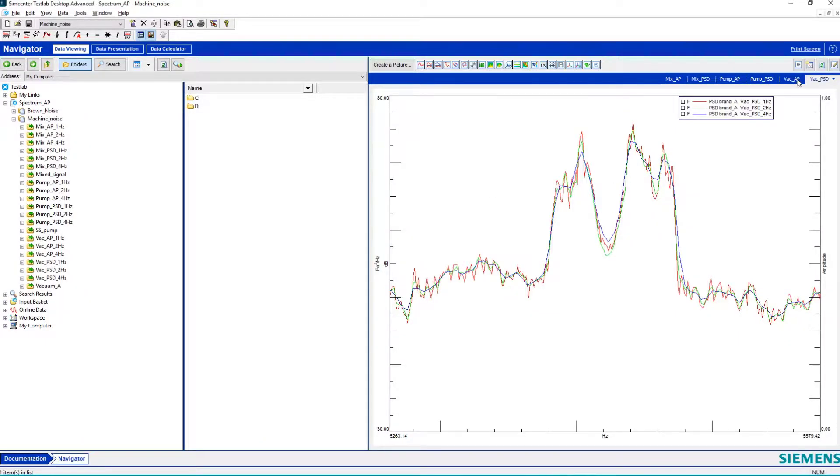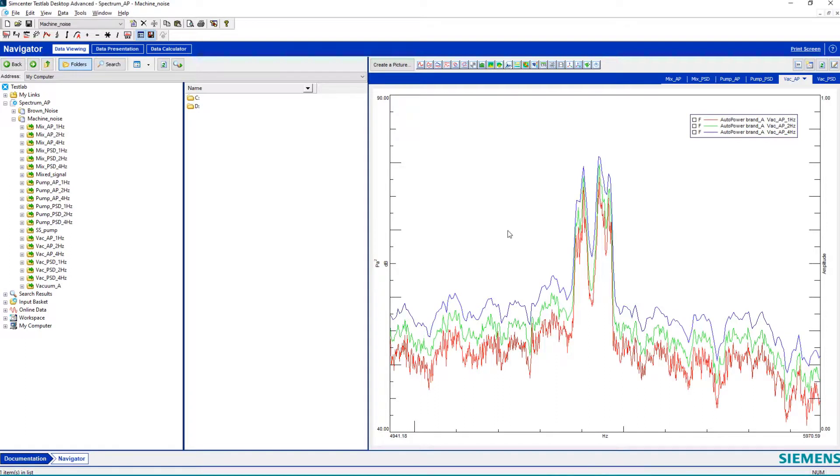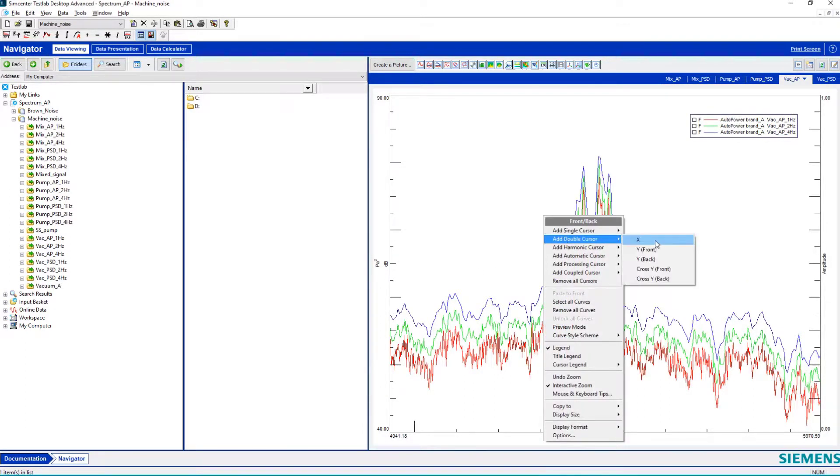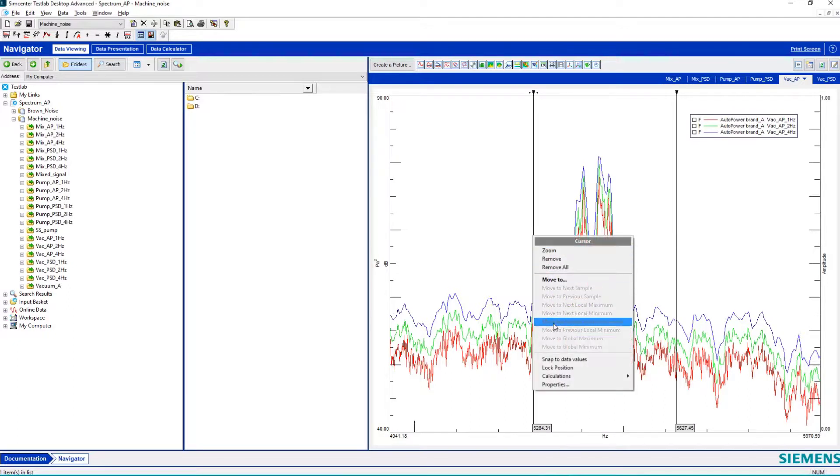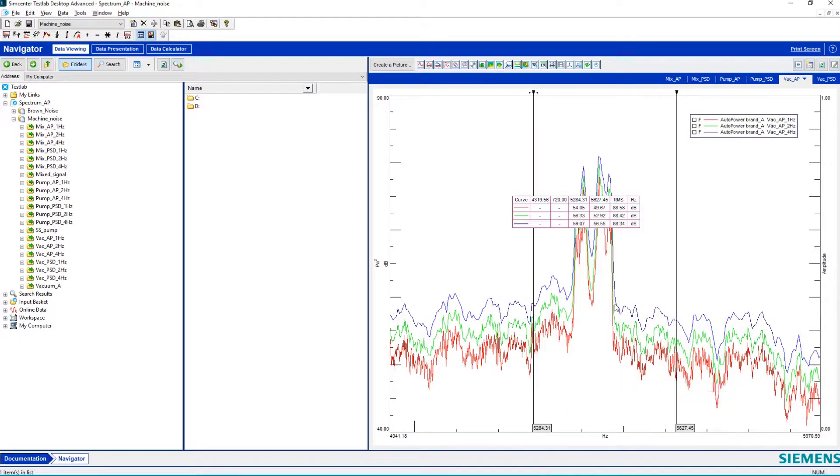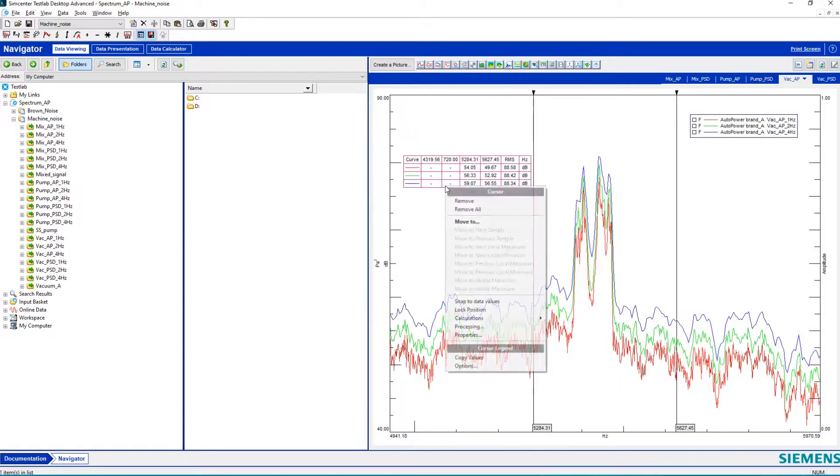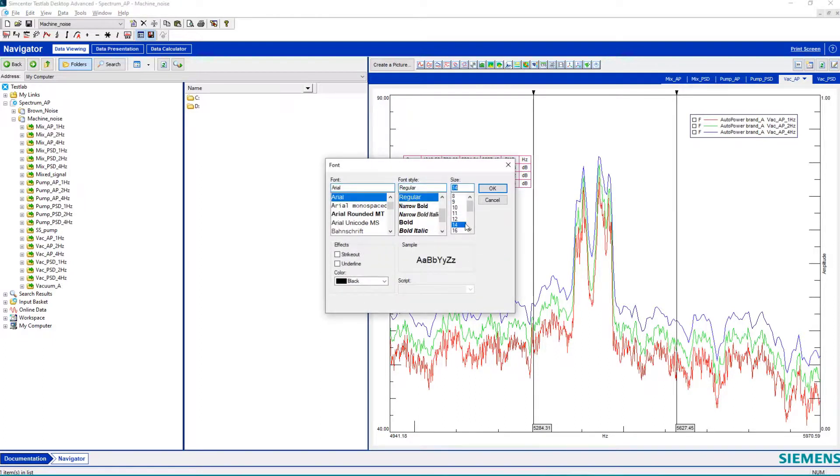And go back to the auto powers where they looked very different. I was kind of curious. I know you can do this double X cursor and calculate an RMS. Yeah, I sure can.